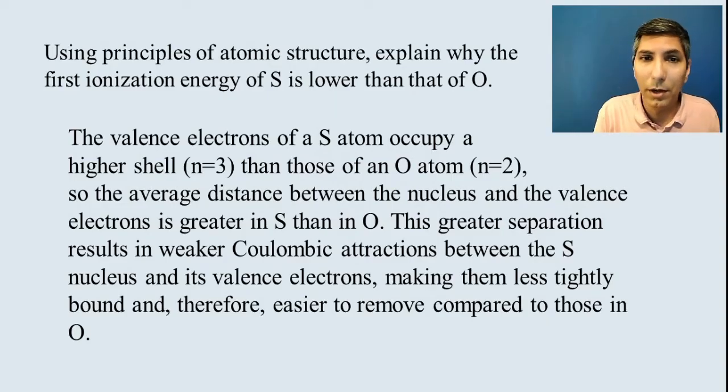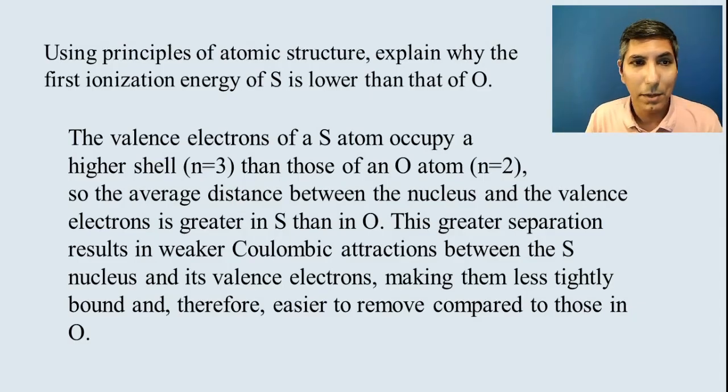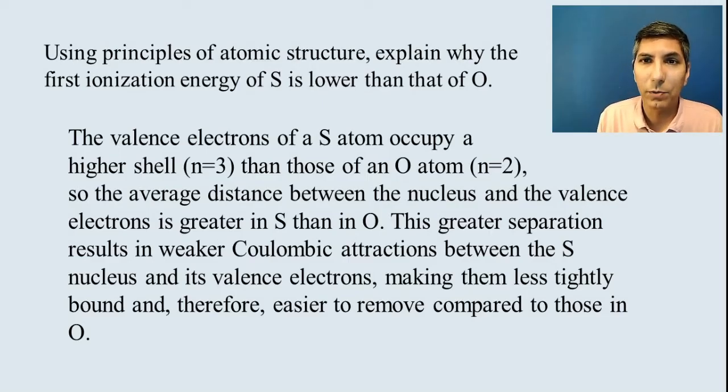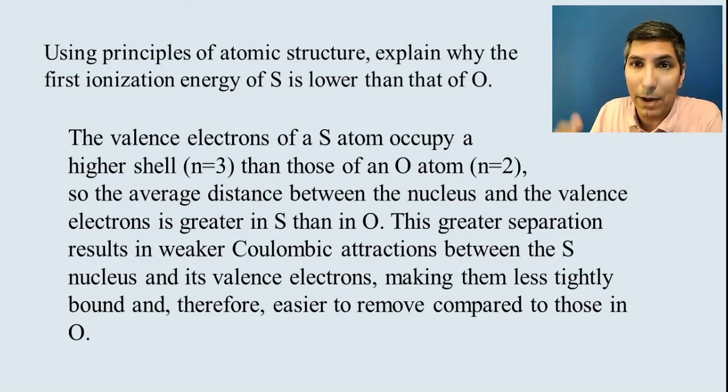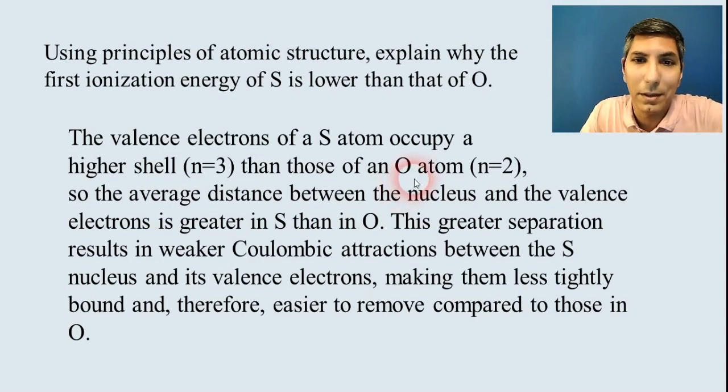So what's going on here? Well, that greater distance or that greater separation in sulfur means that we're going to have weaker Coulombic attractions. That means weaker attractions between protons and electrons. And that means that in sulfur, your outermost electrons are less tightly bound. And it's easier to remove them compared to what you have in oxygen.